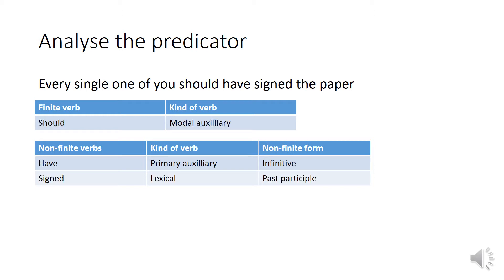'Should have signed' — it's three verbs. Which verb in this predicator is finite? It's 'should'. The first verb in the predicator is always finite. The finite verb is a verb that can change its tense. You can change 'should' to 'shall': 'Every single one of you shall have signed the paper,' which changes the grammatical tense of the sentence. As a rule of thumb, the first verb — or if it's the only verb — in the predicator is always finite.